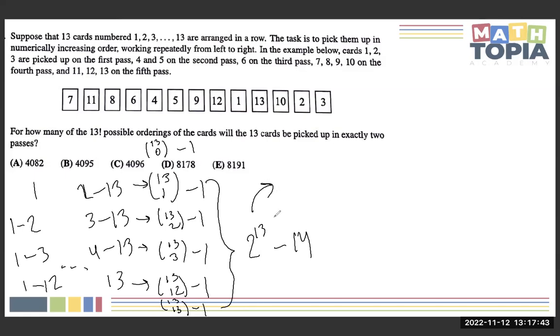So our answer is just 2 to the power of 13 minus 14. And 2 to the power of 13 is just 8,192. And if we subtract, we get 8,178.